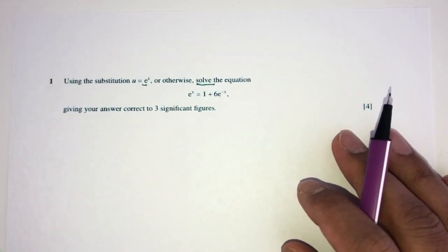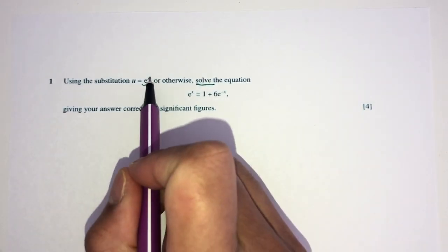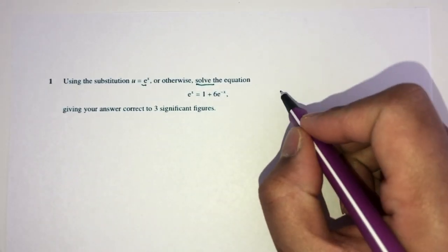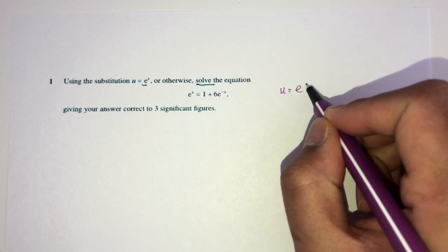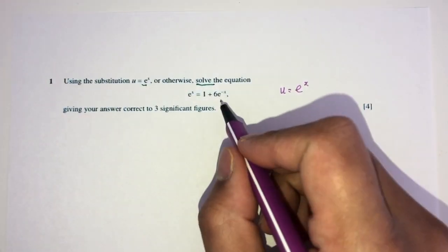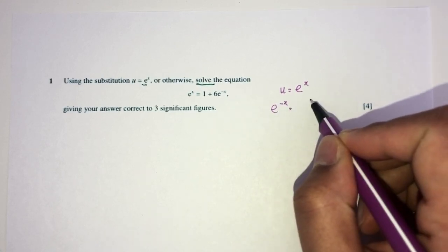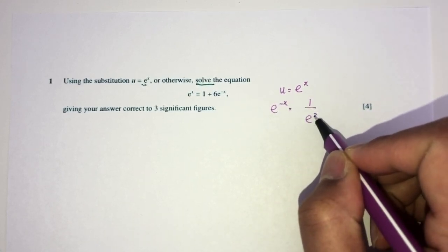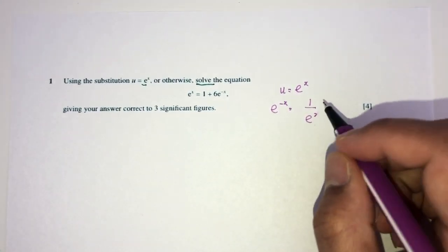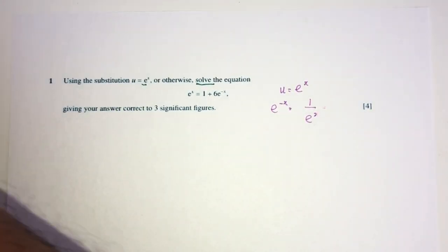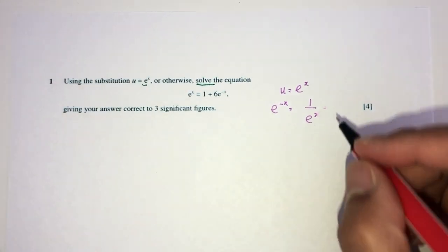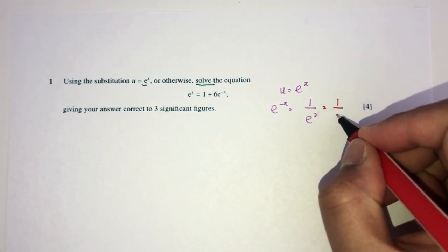So, one by one, we first have to use the substitution. So, u is going to be exponential power x. Now, here we have minus x. So, here we have this. Now, we should know this is as simple as 1 over this one, if that makes sense.